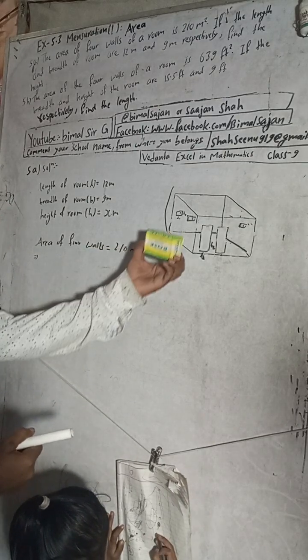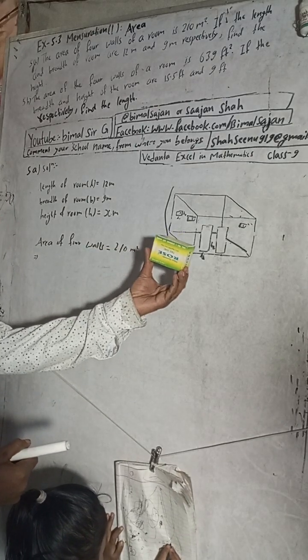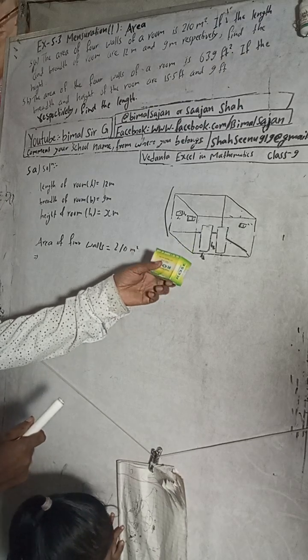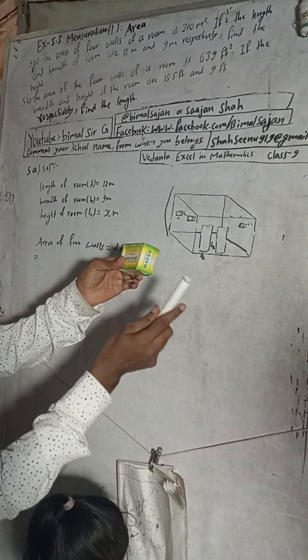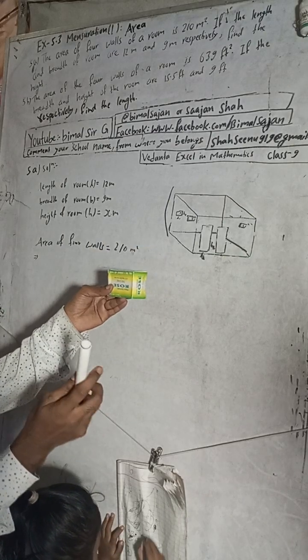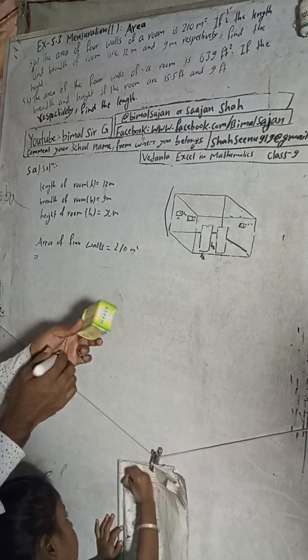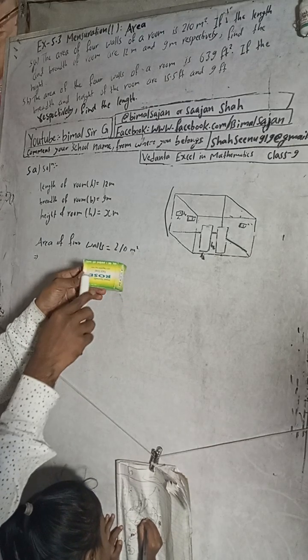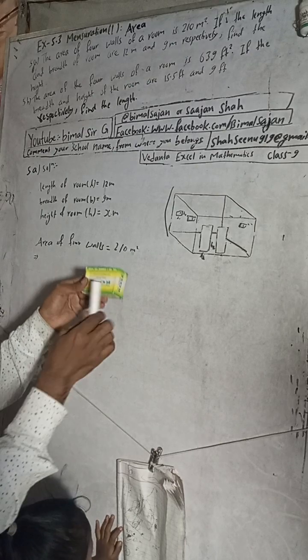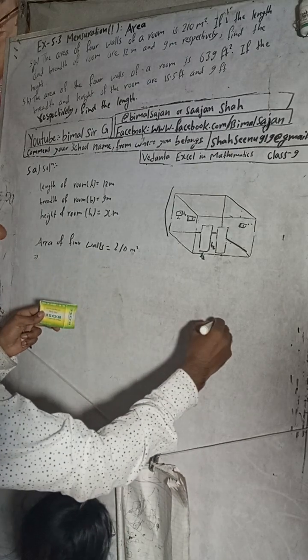This is our room. You can consider this is the room and these are four walls: front, back, left, right. Now suppose this is length, this is breadth, this is height. So this area will be length times height.